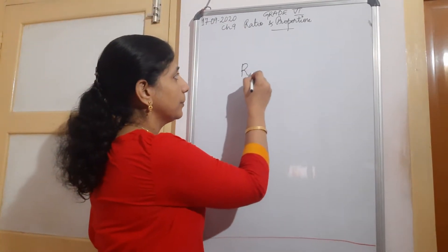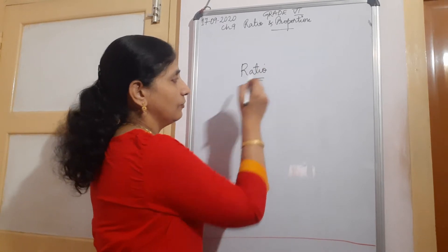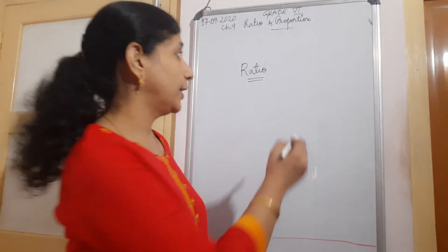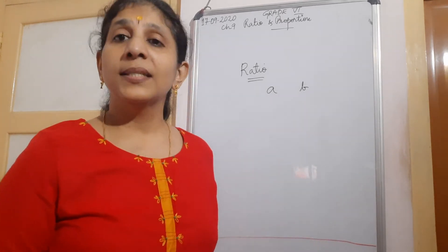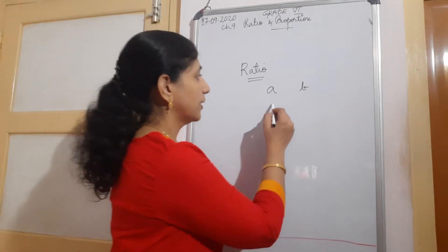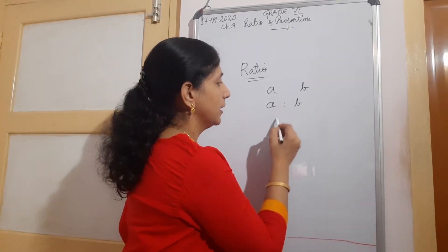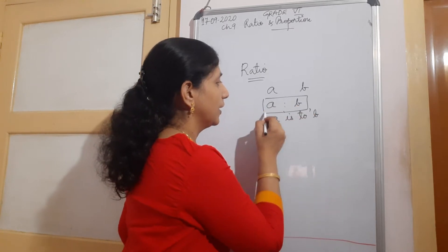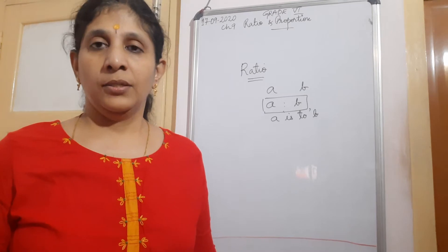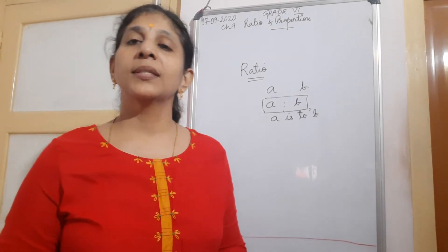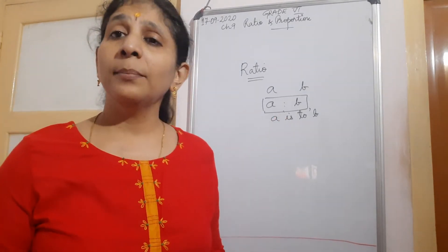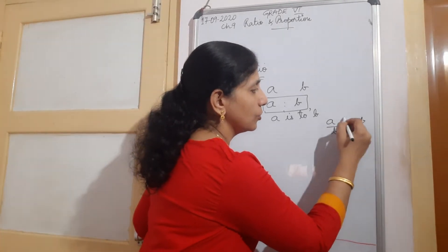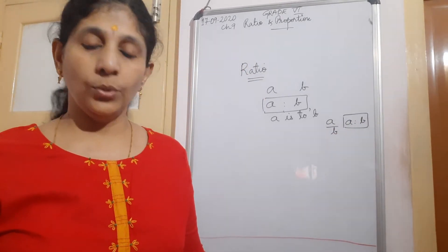So today's topic is ratio and proportion. First point is ratio. When you compare two quantities, the two quantities should have the same unit. Suppose A is one quantity and B is another quantity, both having the same units. Then we say A ratio B - that is we put two dots - it is read as A is to B. So ratio is nothing but a fraction. We are comparing it by division, that is A by B or A ratio B.